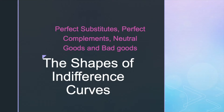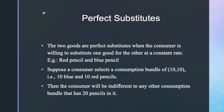Let's discuss the shapes of indifference curves in case of perfect substitutes, perfect complements, neutral goods and bad goods. First, let's discuss the shape of the indifference curves when the goods are perfect substitutes to each other. The two goods are perfect substitutes when the consumer is willing to substitute one good for the other at a constant rate.